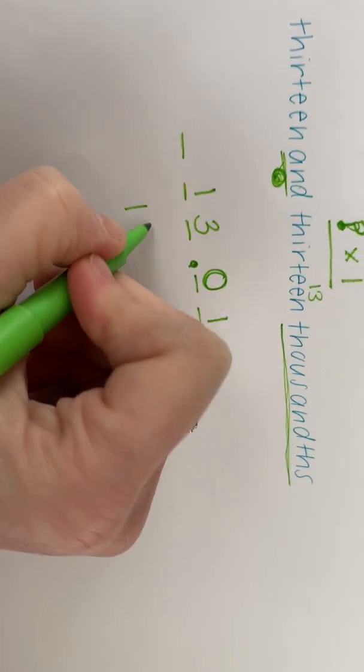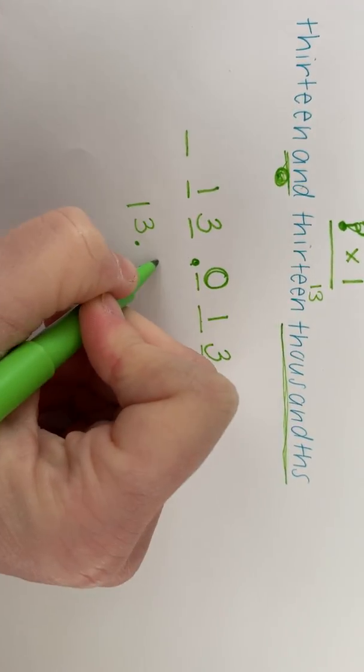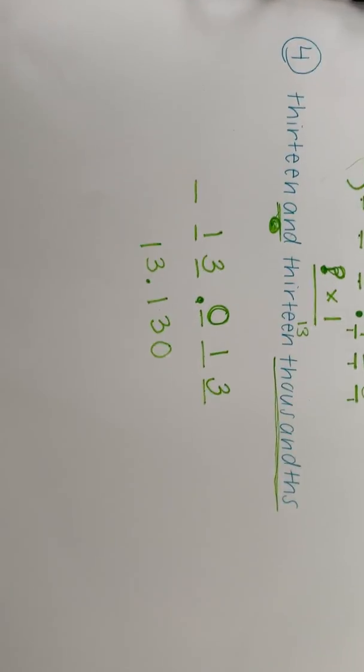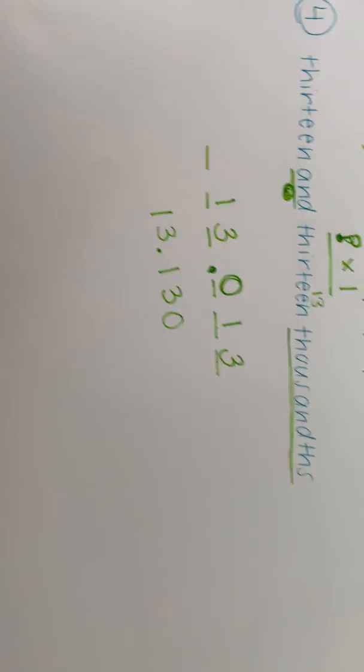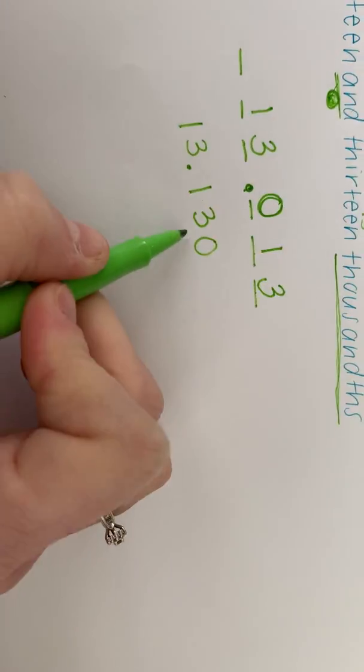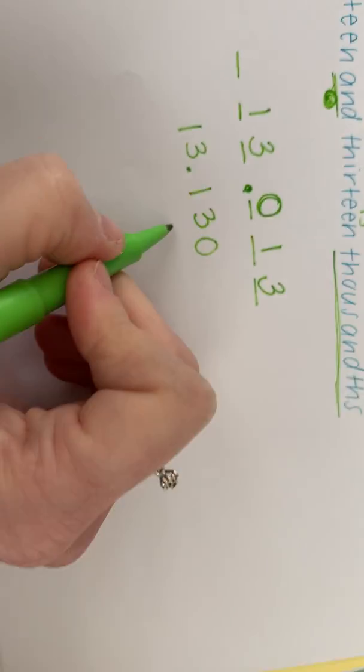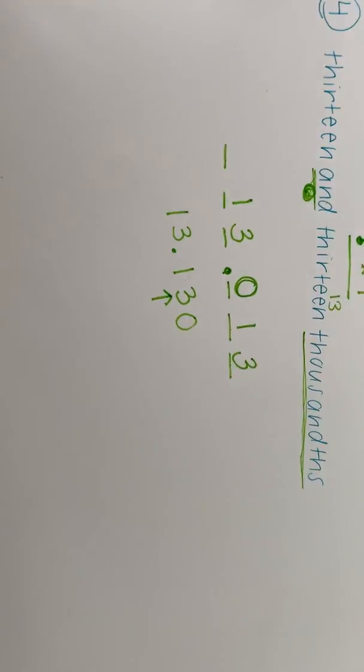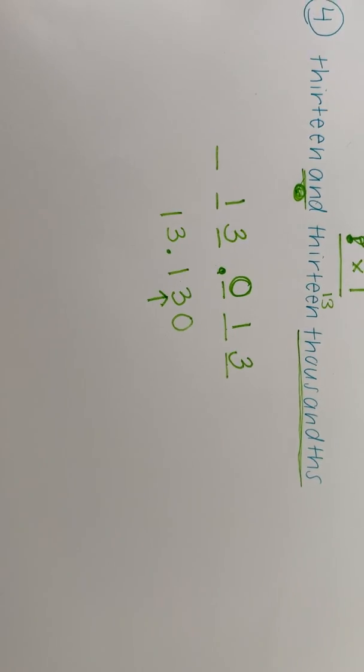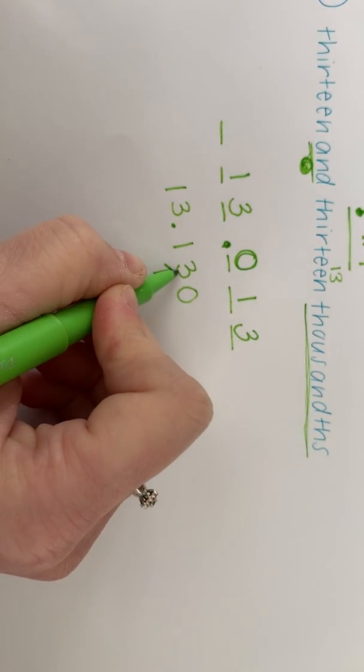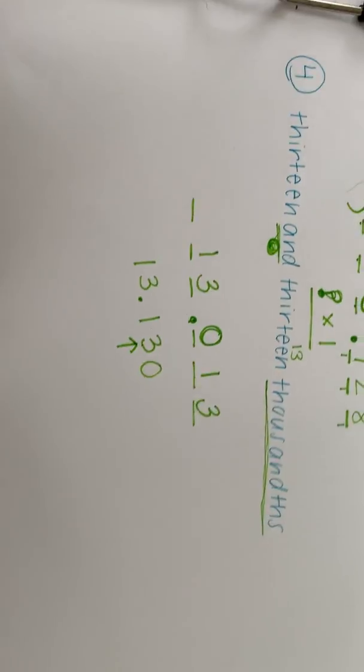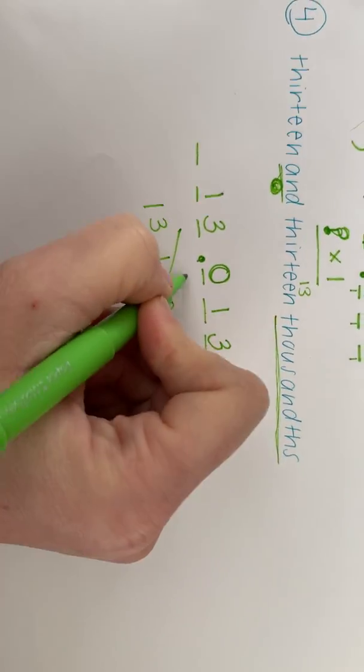My biggest fear is that you guys would write it like this. This would be 13 and 13 hundredths because this three is in the hundredths spot space right here. So in order to make that 13 thousandths, you have to put your three in the thousandths spot like we did up here. So this one is not correct.